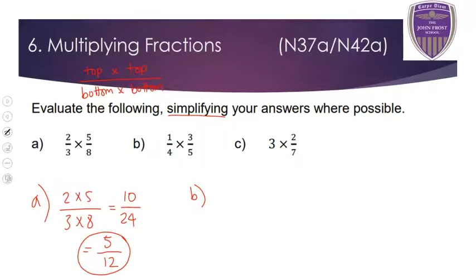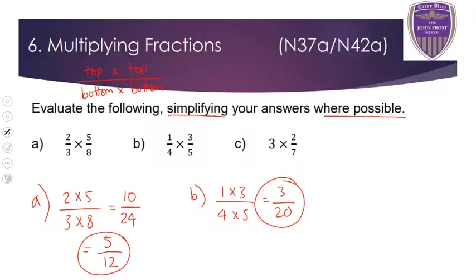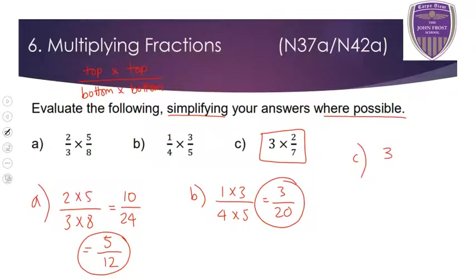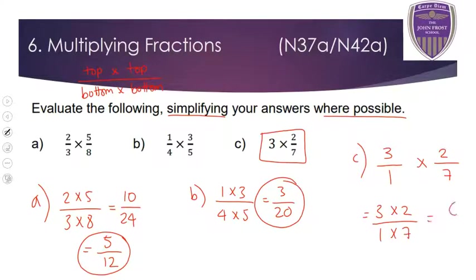For question B, times the top two together: 1 times 3 on the top, 4 times 5 on the bottom — 1 times 3 is 3, 4 times 5 is 20. Can't simplify, so the answer is 3 over 20. For question C, this is a whole number times a fraction. Don't forget to change the 3 into a fraction — any whole number becomes a fraction by putting a 1 on the bottom, so 3 becomes 3 over 1. Then 3 over 1 times 2 over 7 — times the tops: 3 times 2 is 6, times the bottoms: 1 times 7 is 7. Answer is 6 over 7.